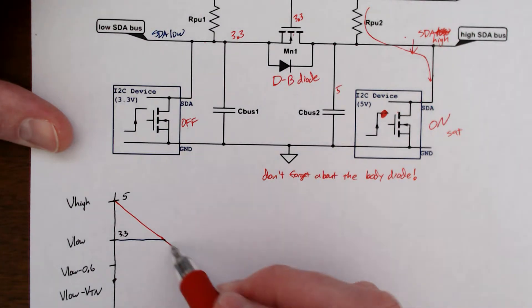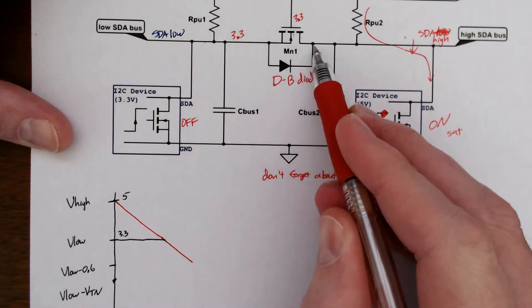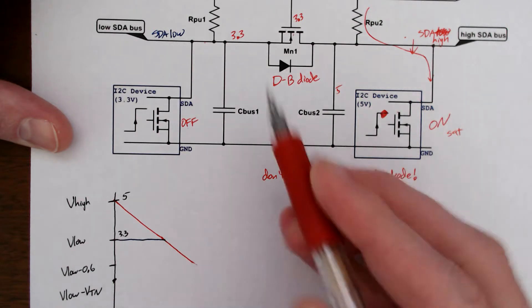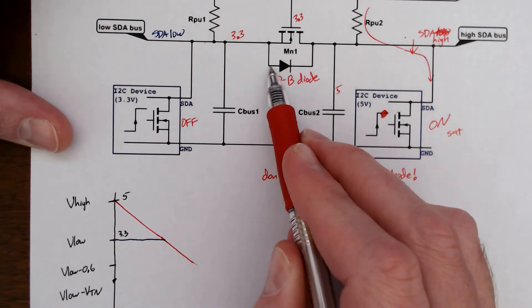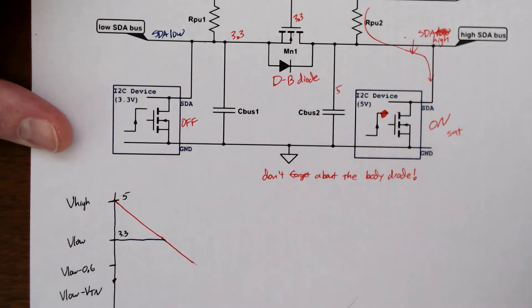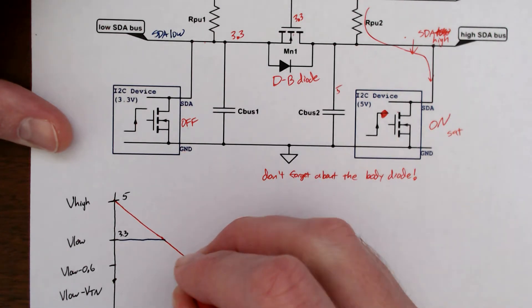So as soon as our drain voltage, which is the right side here, gets to be 0.6 volts or so lower than the source voltage or the anode to cathode, we're going to forward bias. Let's see here, here's that point.